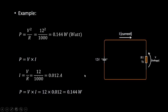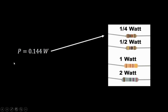There is no difference in using different formulas for calculation of power in a resistor — as we calculated, the power of the resistor is 0.144 watts.